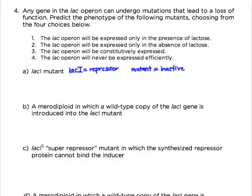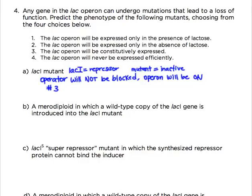If an inactive repressor protein cannot bind the operator, the lac operon won't be turned off. The operator will not be blocked, RNA polymerase can go down and transcribe the rest of the operon, and the operon will be on. Of the four phenotype choices, we choose option number 3: the lac operon will be constitutively expressed.